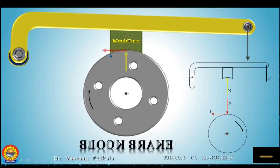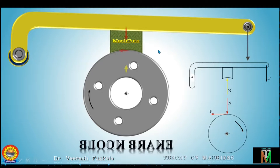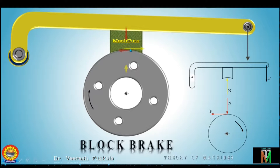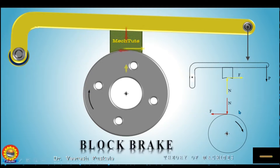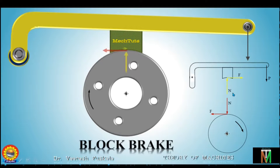According to Newton's third law, an equal and opposite reaction acts as the friction force on the block. So the block experiences a friction force towards the right, opposite to the friction force on the drum. According to Coulomb's friction, this force of friction equals mu times N — the friction force equals mu times the normal force.